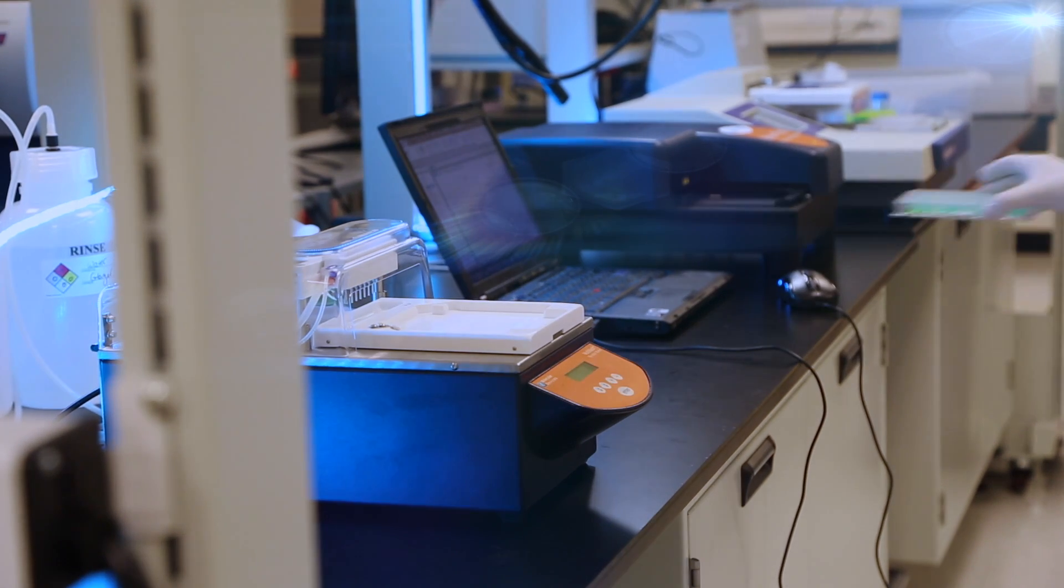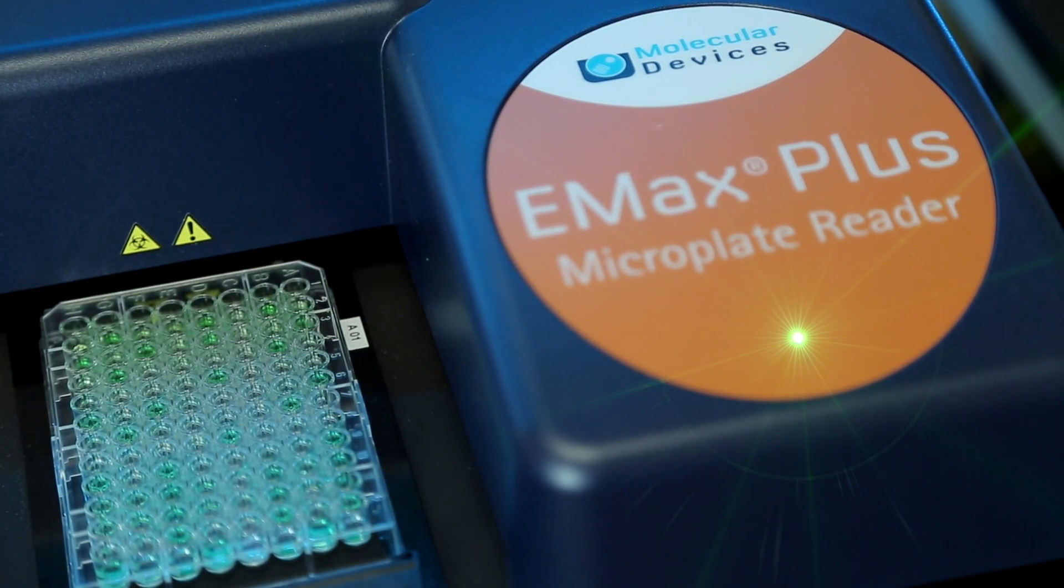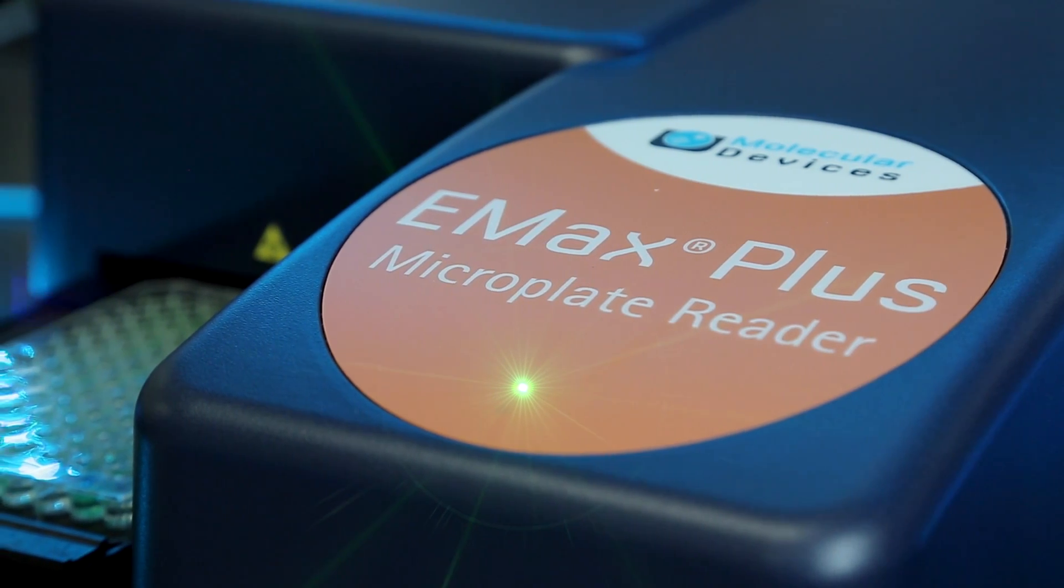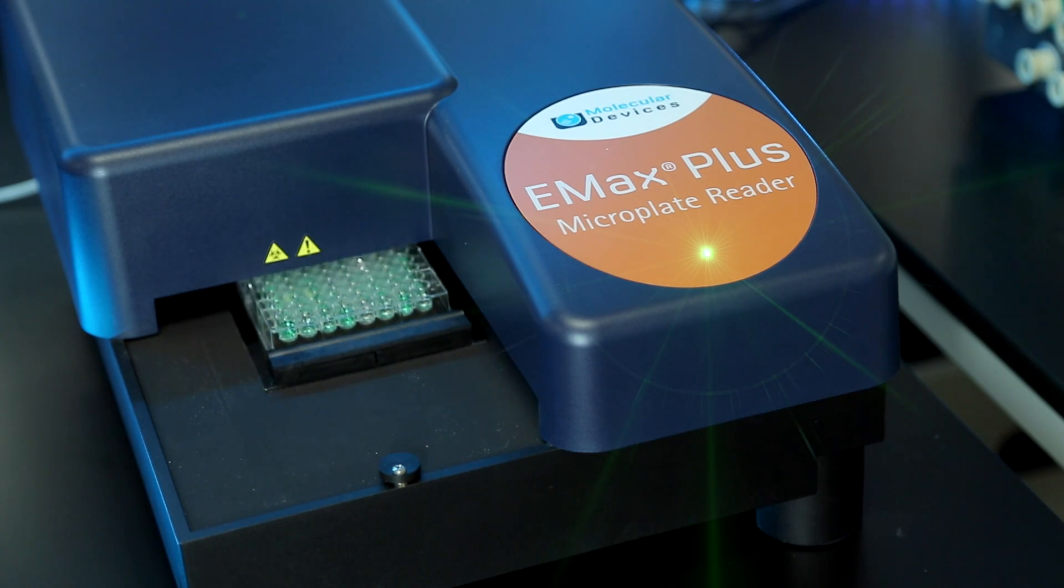After washing your plate, an ELISA plate can be read in the Emax Plus Microplate Reader. This new affordable compact reader comes pre-configured with eight filters that cover a wide range of applications, including many ELISA options.